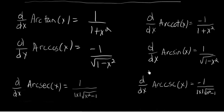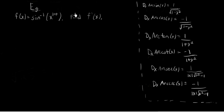So we've stated all of the formulas for the derivatives of the inverse trig functions, so now we'll work a couple of examples that make use of these formulas, along with other differentiation rules that we've encountered so far. In the first example, we have f of x equals the arcsine of x to the 100th power, and we're asked to find the derivative of f with respect to x.